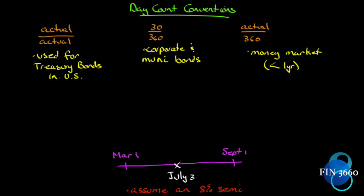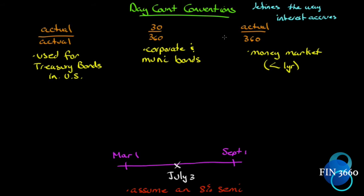Hopefully this is a little more than a review from your fixed income course. We have three different types of day count conventions for the way that we count days. The day count defines the way interest accrues over time. When we buy a bond, we pay the quoted price, but we owe the seller the accrued interest up to the point that we buy it — and that accrued interest depends on how we count days.